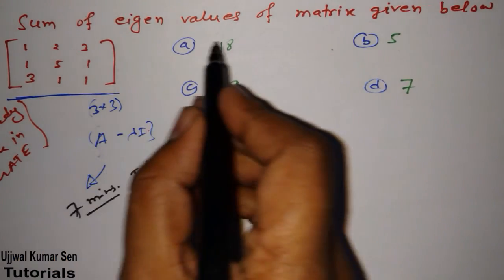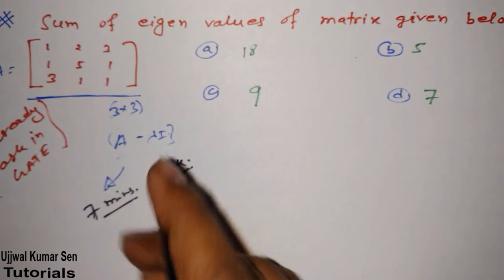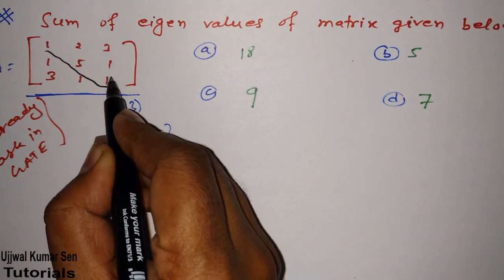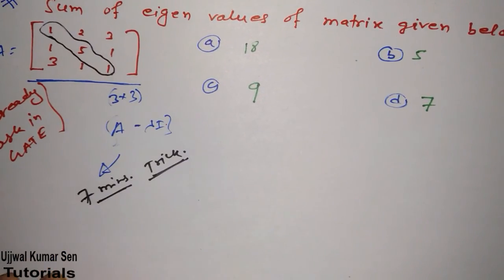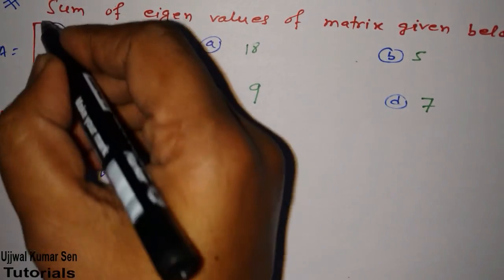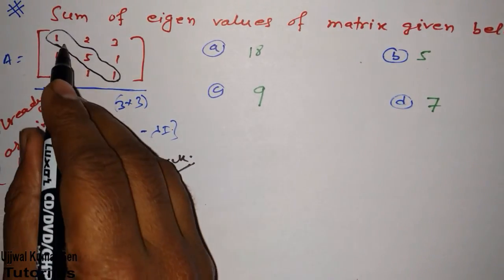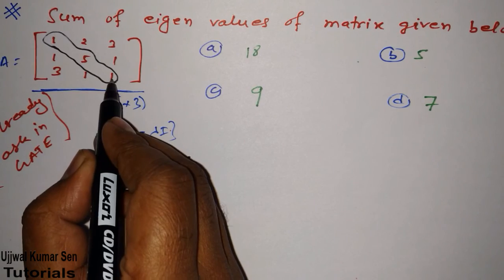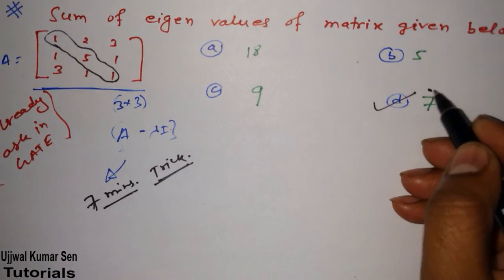For sum of eigenvalues, how to find out: just do addition of this diagonal. So 1 plus 5, 6, plus 1, 7. So option D is the right answer.